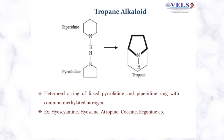The next class is tropane alkaloids. The crude drugs which contain tropane alkaloids include hyoscyamine, hyoscine, atropine, cocaine, etc. This class consists of two fused heterocyclic rings: a piperidine (six-membered) ring and a pyrrolidine (five-membered) ring.